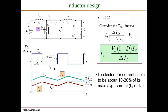Both the buck and the Ćuk converter apply minus Vo to the inductors during the off interval. The basic derivation is: L·dI/dt = VL. Considering the off interval, dI is delta-IL and dt is (1 minus D)·Ts. Substituting these values gives the expression for inductance: L = Vo·(1 minus D)·Ts / delta-IL. The same equation is valid for both inductances L1 and L2.